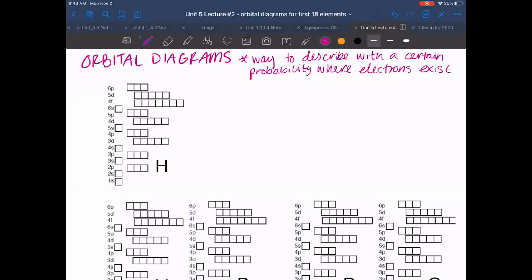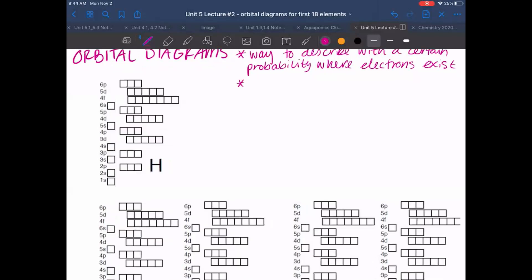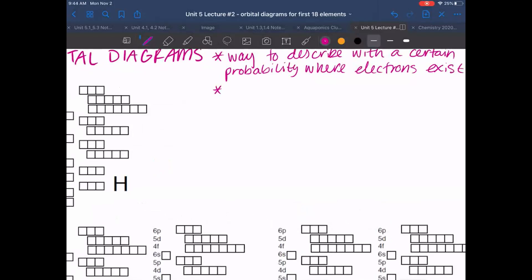Okay, so as I was just saying, we're going to talk about orbital diagrams today. And so what these orbital diagrams are, are a way to describe where these electrons exist with a certain probability attached to it. And so there's mathematically, this is like a mathematically derived idea, but we're just going to focus on the concepts because this is not a quantum mechanics course. And so I'm going to fill in a few things that you should know about orbital diagrams before we start.